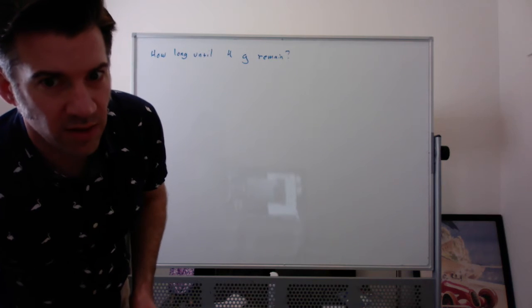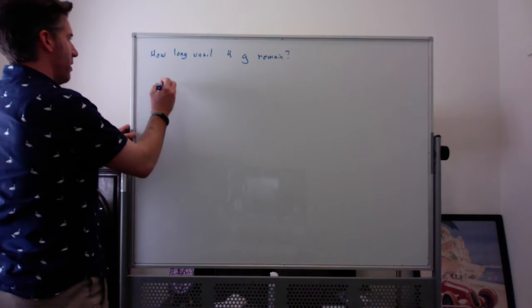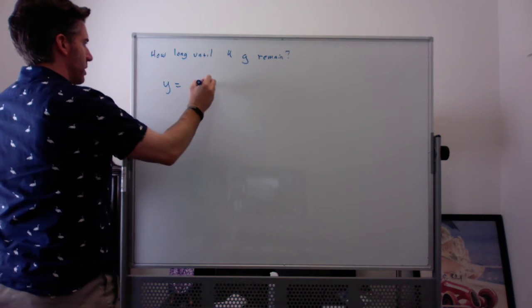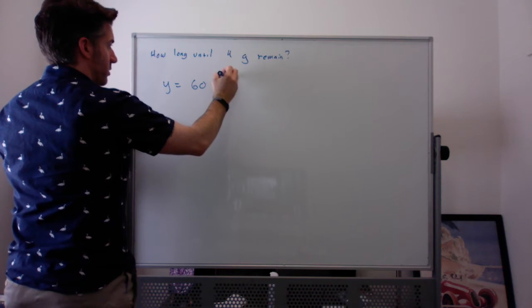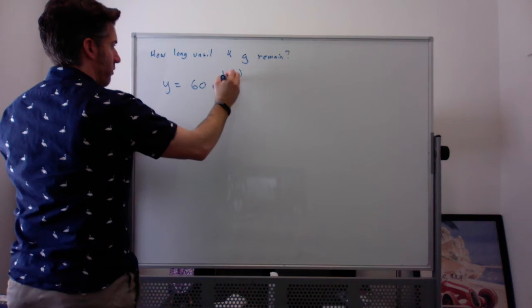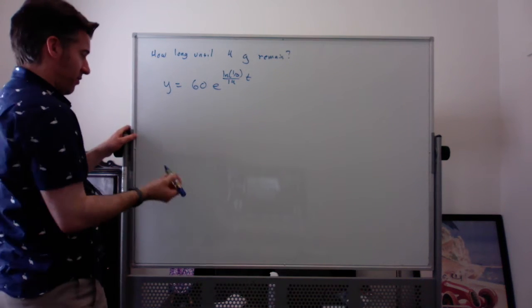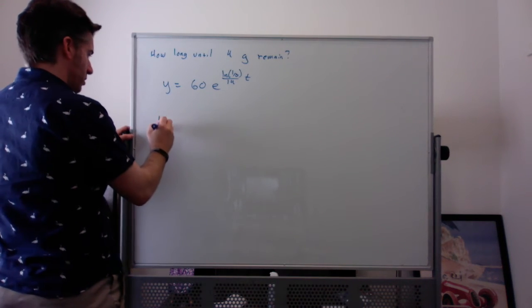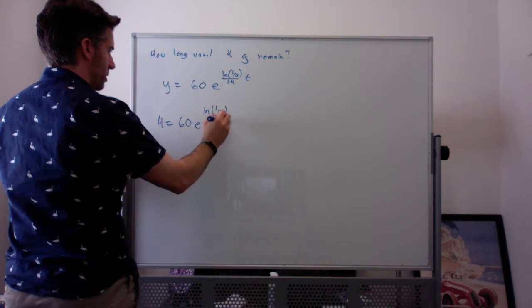We're just going to say, well, now for y equals 60e^(ln(1/3)/14 times t). Instead of saying y equal to 30, if we defined the half-life, we're going to set y equal to 4. So 4 equals 60e^(ln(1/3)/14 times t).